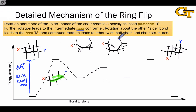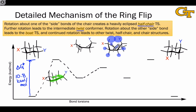The boat is a transition state, or energy maximum, primarily because the two so-called flagpole groups are bumping into each other to a large degree. We can also identify some torsional strain due to apparent eclipsing between groups on the side carbons. So the boat has some problems, but its strain isn't as bad as the half chair, so it's not the global maximum.